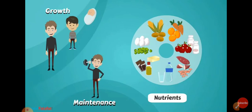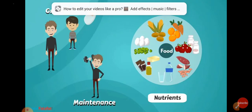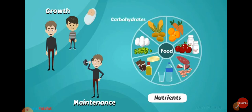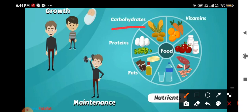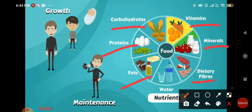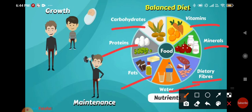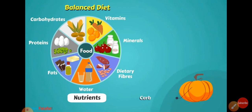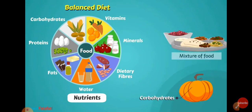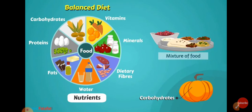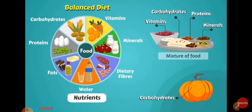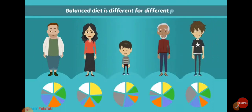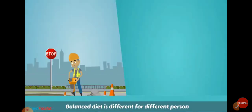A balanced diet is required for the growth and maintenance of our body. The nutrients contained in a balanced diet are carbohydrates, proteins, fats, vitamins, minerals, dietary fibers and water. Dietary fibers and water are for the proper digestion of food. A particular type of food cannot contain all the nutrients, so all different types of food should be included in our daily meal so that we get a little amount of every nutrient, which will fulfill the nutrient requirements of our body.